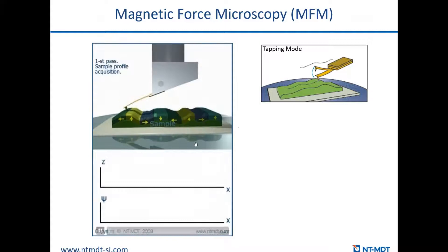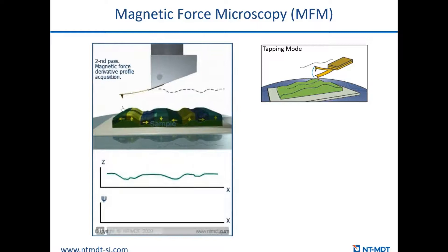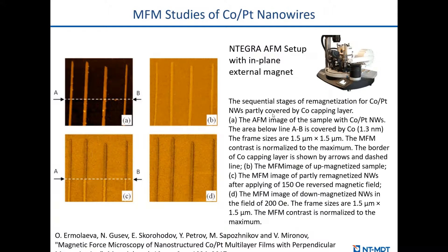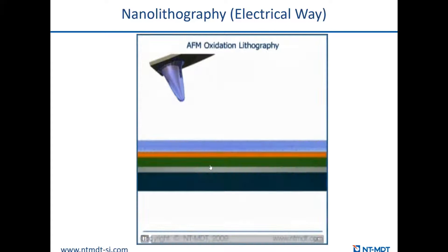A few words about magnetic force microscopy. If we use a magnetized tip, we can measure the magnetic response of the sample if it has magnetization in different directions. We can also apply an external magnetic field — controlled from the software — in both vertical and in-plane directions. For example, you can see how the domain structure of yttrium iron garnet changes with applying different values of magnetic field in the vertical direction. Our customers also applied the magnetic field in-plane, looking at how the magnetic polarization of nanotubes is changing.